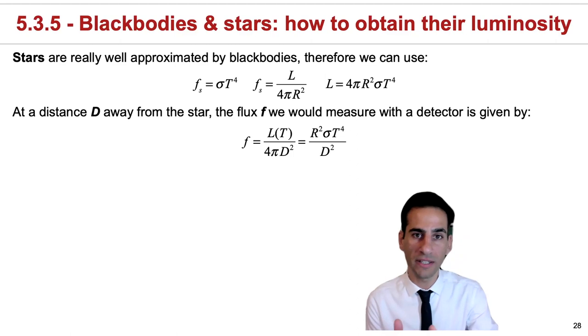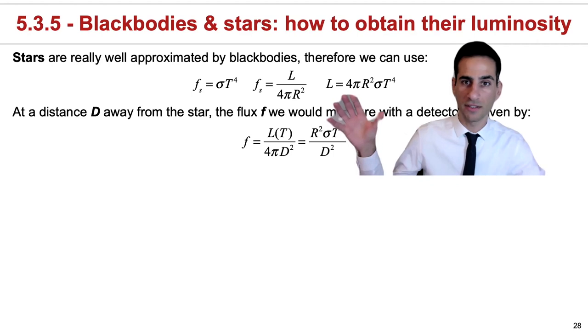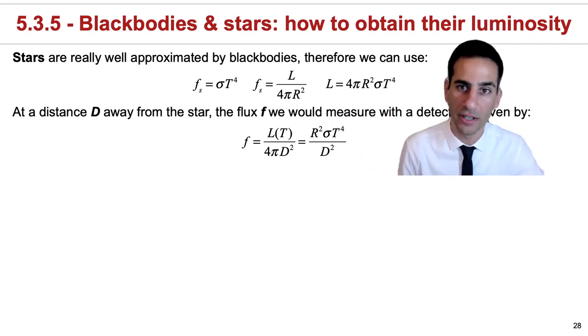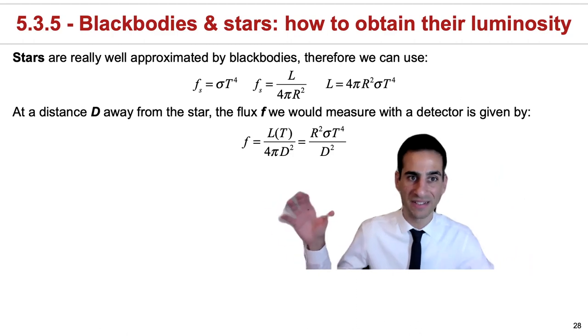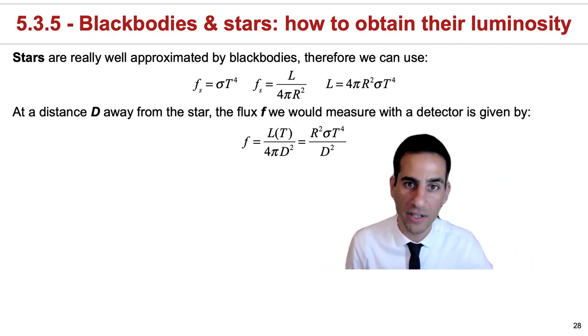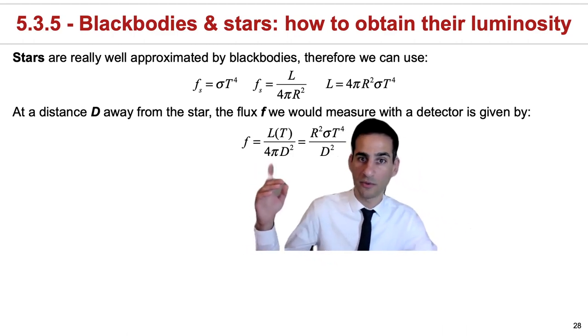Having calculated what is the luminosity of a blackbody, we should remember these equations—they will come in handy when we talk and study stars. And this also means that at a specific distance D away from a star, the flux we will be measuring now in a detector will essentially just be given, we saw before, as a luminosity.